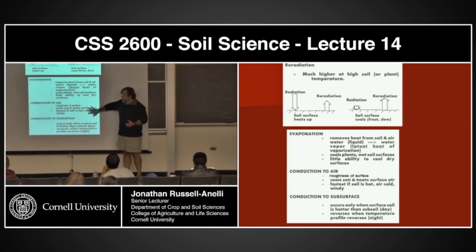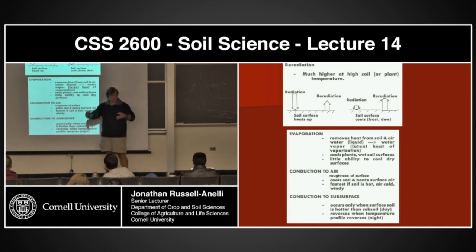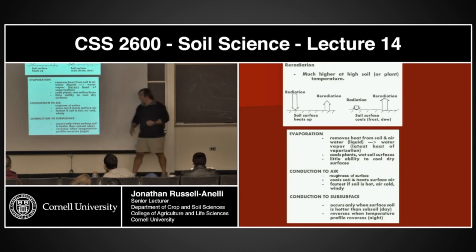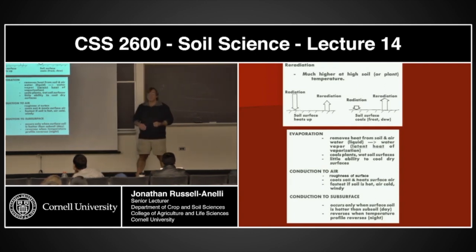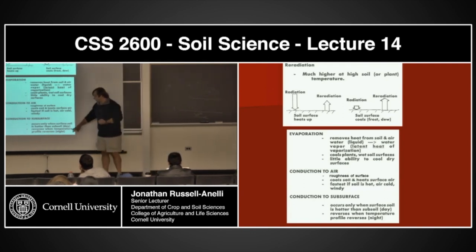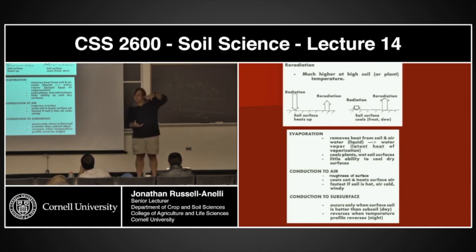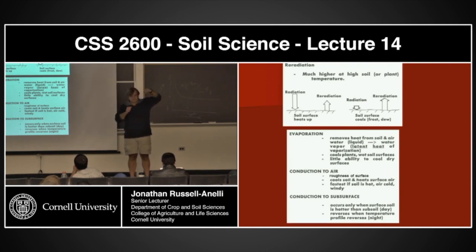I can transfer heat upward into the air, but I can also transfer heat downward. If I heat a surface, that heat is going to migrate through the material. This occurs only when the soil surface is hotter than the subsurface. And it reverses when that temperature profile switches — if it gets hot down below and the surface starts getting cooler, the energy is going to be transferred upward.